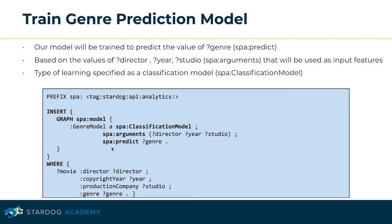In the WHERE clause, we select the data we're interested in — the so-called features. Therefore, in our movie genre case, our model would be trained to predict the value of genre based on the values of director, year, and studio properties.